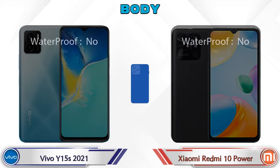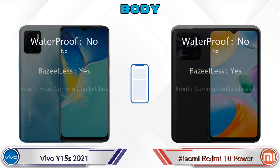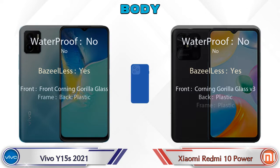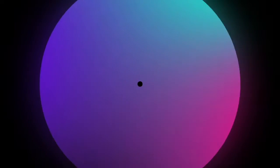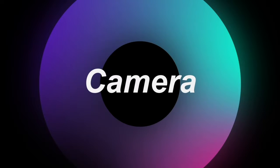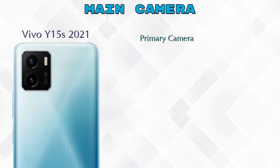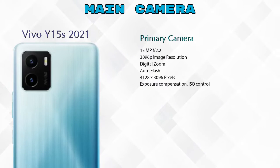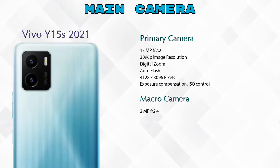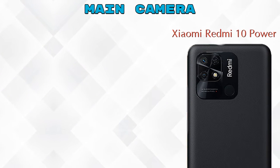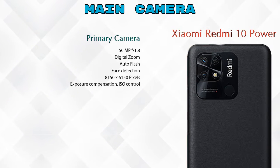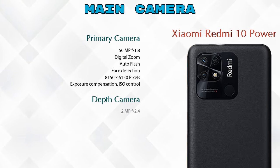Let's see the complete details about the body of both phones. Now let's talk about our favorite feature — the camera. For the rear camera, the Y15s 2021 has two cameras: a primary camera and a macro camera. The Redmi 10 Power also has two cameras: a primary camera and a depth camera.